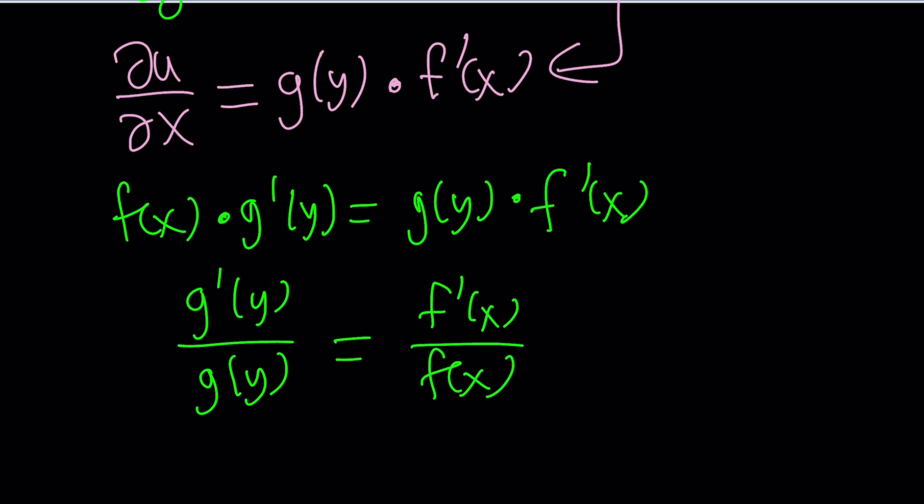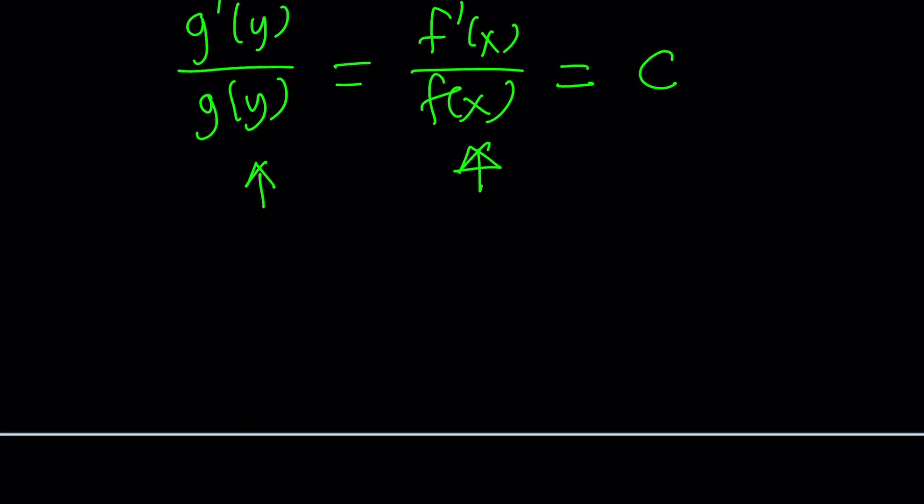Well, beautiful, but at the same time kind of problematic because g prime of y is a function of y. g is differentiable, f is differentiable, and the derivatives are also functions of the same variable. So we have a function of y equals a function of x. Function of y does not contain x. Function of x does not contain y. That can only happen if you have a constant. Because a constant is a function of any variable, so it would satisfy both.